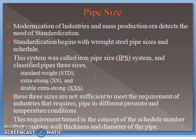The standardization begins with wrought steel pipe sizes and schedules. This system of standardization for wrought steel pipe is called the IPS system — Iron Pipe Size system. It classifies pipes in three sizes: first is standard weight, denoted as STD; next is extra strong, XS; and double extra strong, XXS.